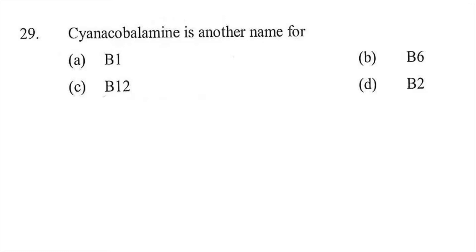Question twenty-nine: Cyanocobalamin is another name for which vitamin — option A B1, option B B6, option C B12, or option D B2. The right answer is C, Vitamin B12; the other name for B12 is cyanocobalamin.